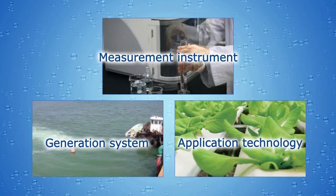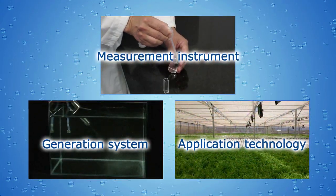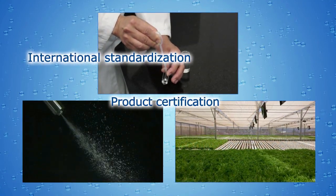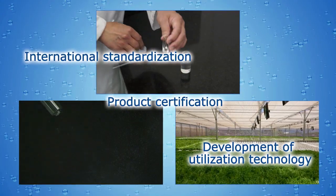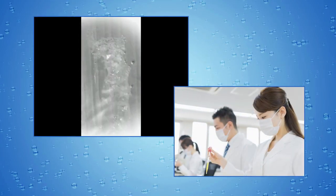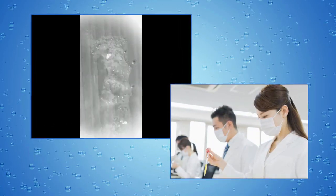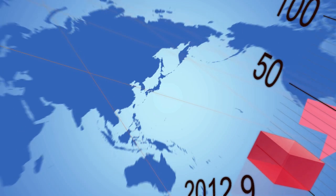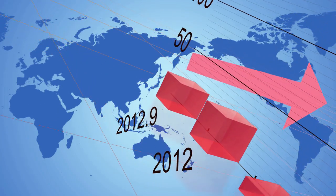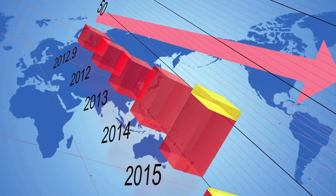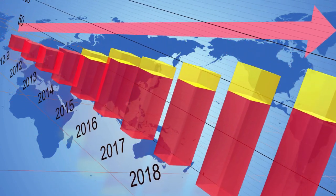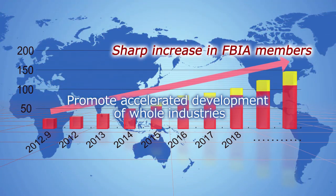FBIA also promotes international standardization and product certification services for fine bubble technology, and coordinates development of utilitarian technology with an aim to establish a global market for their products. Furthermore, we conduct research together with universities and national institutes for these technologies. FBIA, established in 2012, continues to expand its domestic and international networks. These activities of FBIA are intended to raise global awareness of the technology, and thus to improve competitive markets as well as accelerate the evolution of relevant industries.